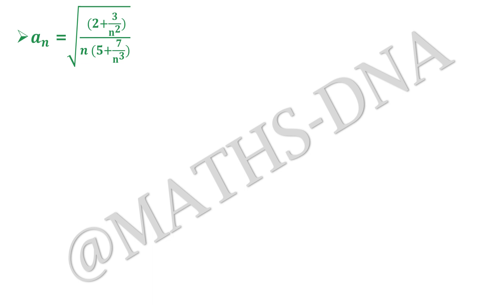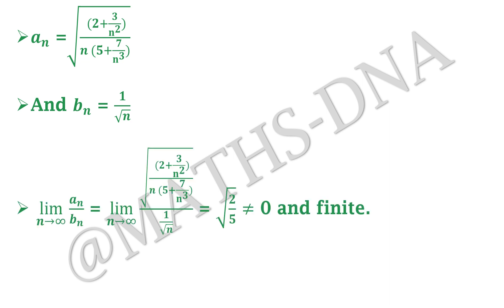Let aₙ = √(2+3/n²) / (n·(5+7/n³)). If we assume bₙ = 1/√n, then it cancels out from aₙ/bₙ and we can easily find the limit. Applying limit n→∞ of aₙ/bₙ gives √(2+3/n²) / (√n·(5+7/n³)) divided by 1/√n, so √n cancels and the limit equals √(2/5), which is finite and nonzero.